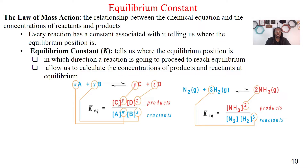I must raise each species to its given coefficient. So in my products, the coefficient for C is Y, so I raise C to Y. The coefficient for D is Z, I raise that to Z. For reactants, A is raised to W, and B is raised to X. So the coefficients become the exponents, and my actual species are expressed in concentration.